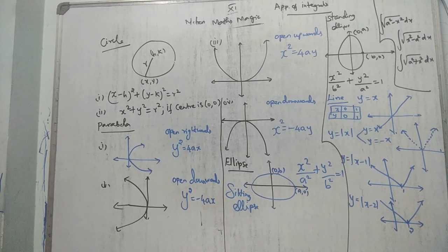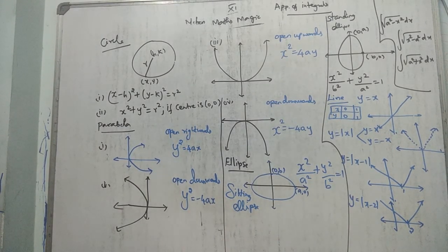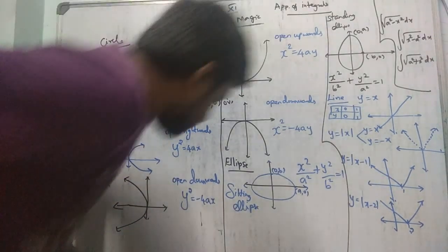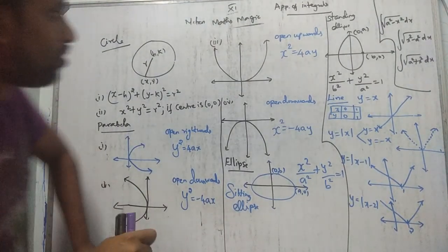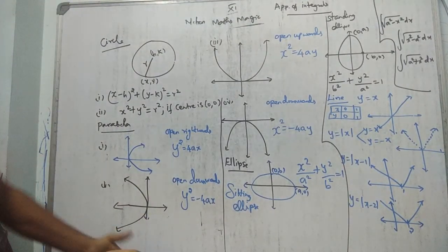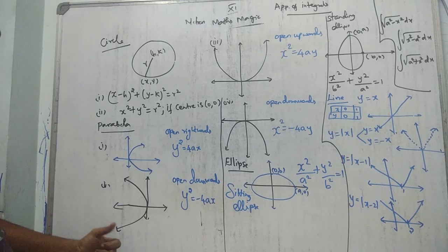Good morning students. This is Class 11, Application of Integration chapter introduction. The other name for this chapter is 'Area of a Bounded Region.' These are the things written earlier for the Class 11 conic sections chapter introduction.